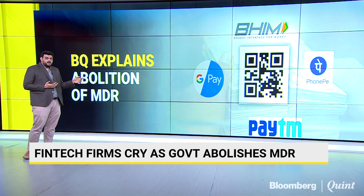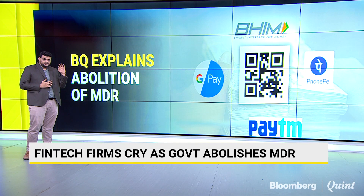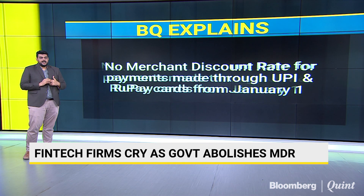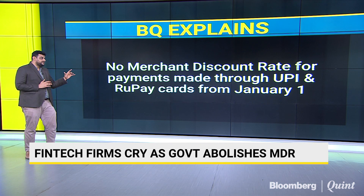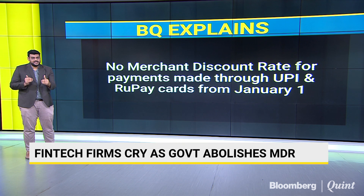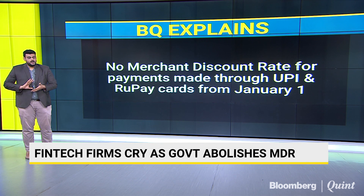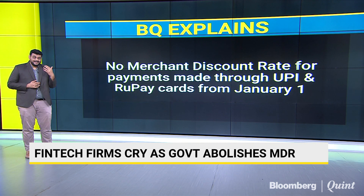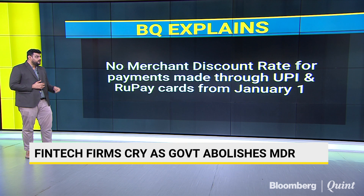The discussion around the MDR, or the merchant discount rate, is heating up again with the finance minister having announced last month that the merchant discount rate will not be applicable for UPI as well as RuPay-related transactions starting the 1st of January. This is an important announcement — what the government tried to do and what exactly this means for the rest of the digital payment market is what we're trying to understand here.